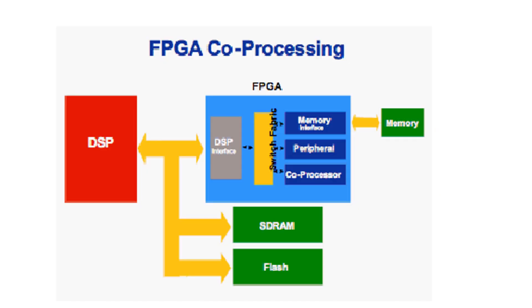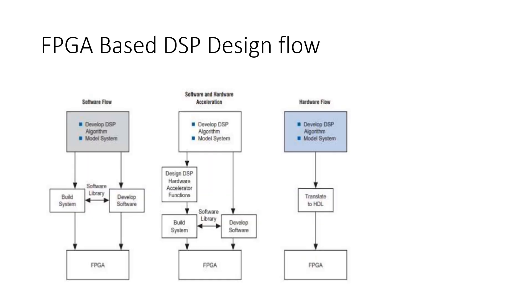FPGA core processing — DSP can also be used as a co-processor alongside the FPGA, which is the main processor. DSP's advantages include fast multiplier units. When FPGA and DSP are collaborated together, you get much higher efficiency in core processing applications.